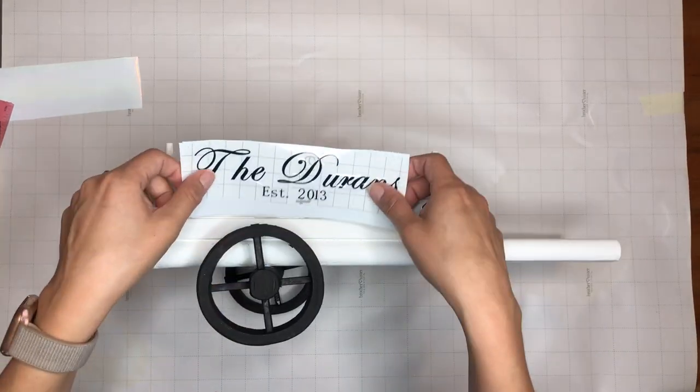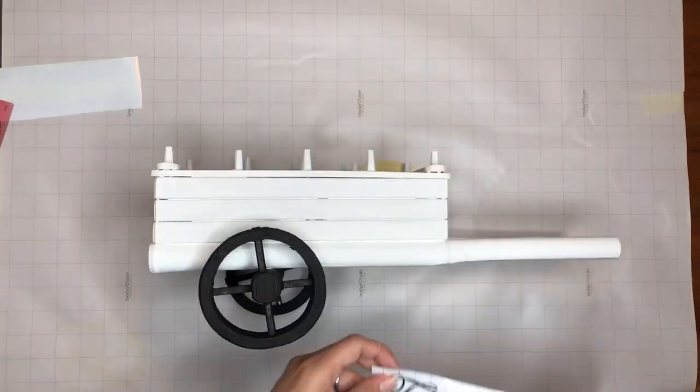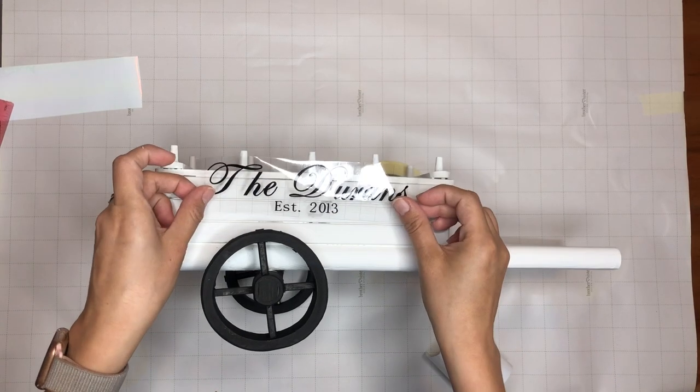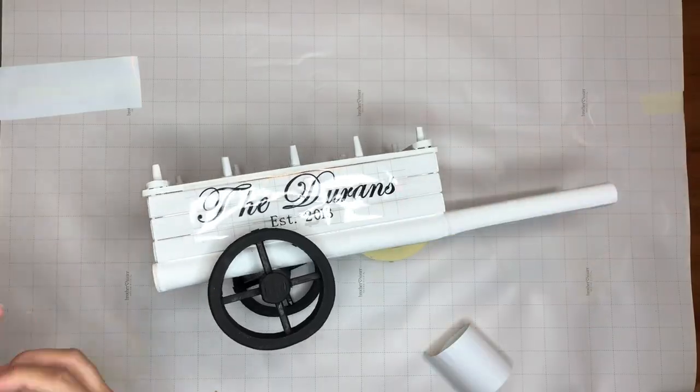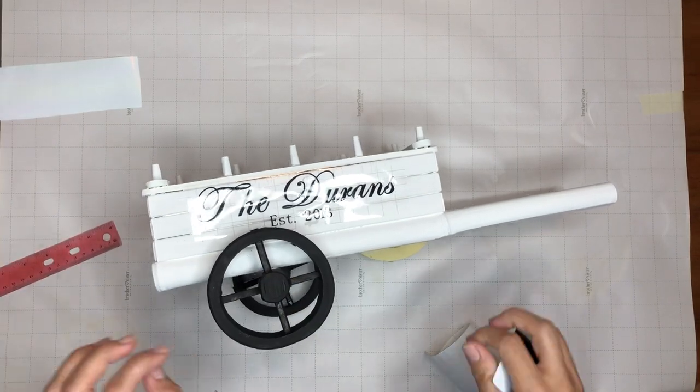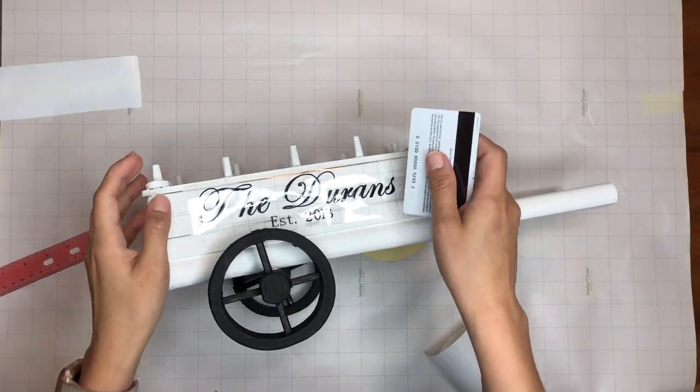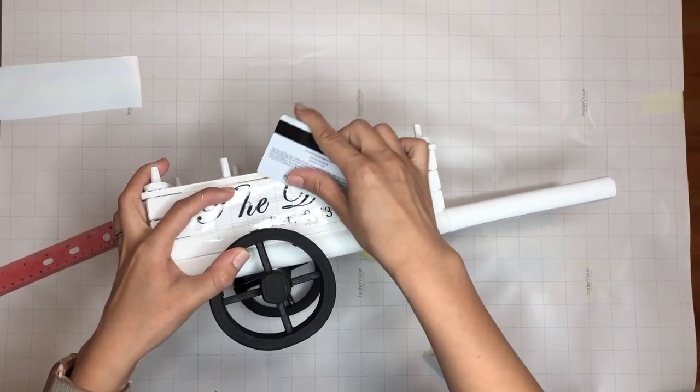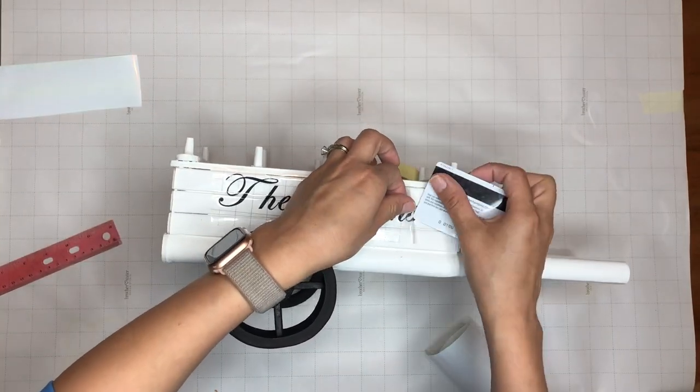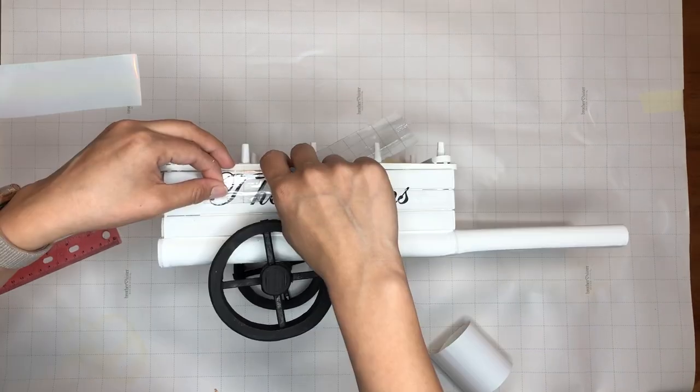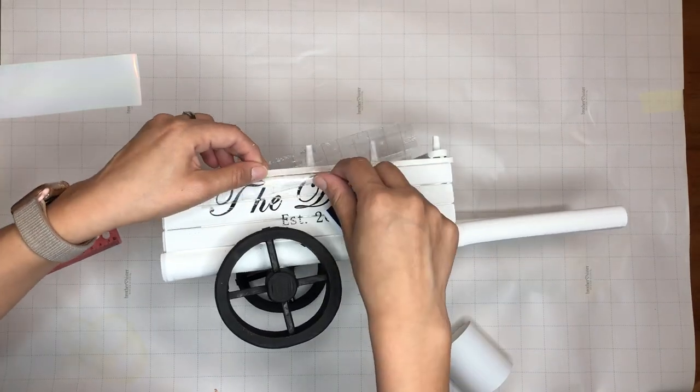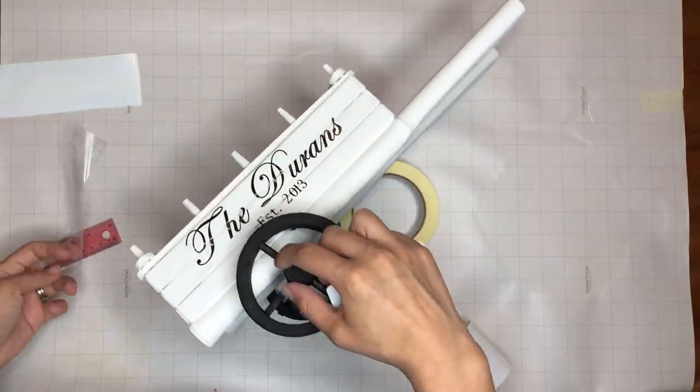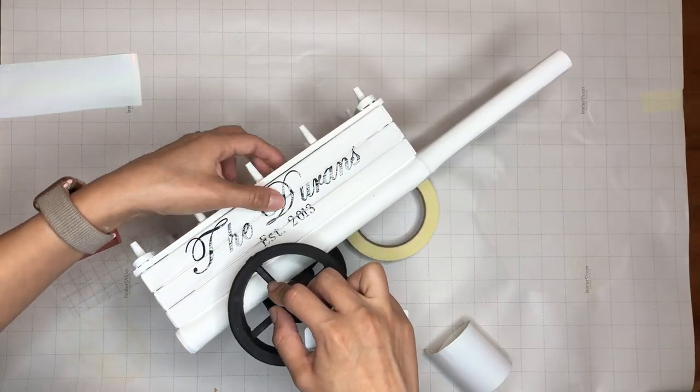So here is what the wheelbarrow is looking like. And it's looking amazing. Now I decided to add the Duran's Establish 2013. That is my family last name. And this would not be possible if my best friend hadn't let me borrow her Cricut machine. So thank you so much, Gabby. You are the best. And yeah, the wheelbarrow is beautiful as it is, but with this I just think it gives it that little something that makes it even more beautiful. Or maybe it's just me. But I love this.